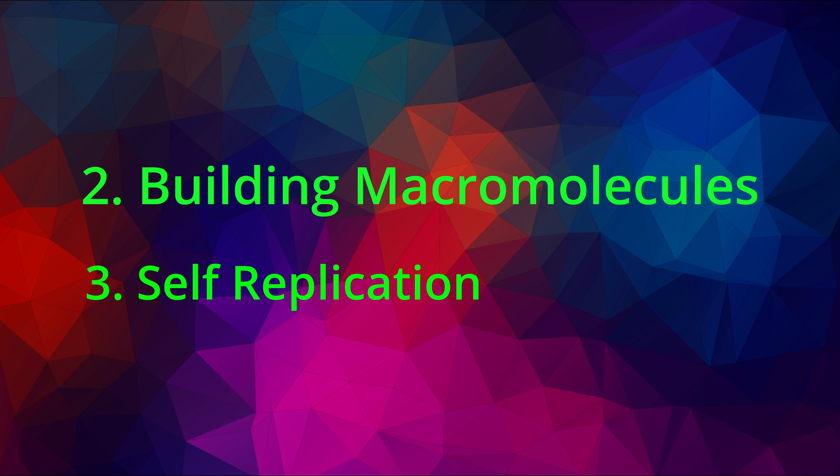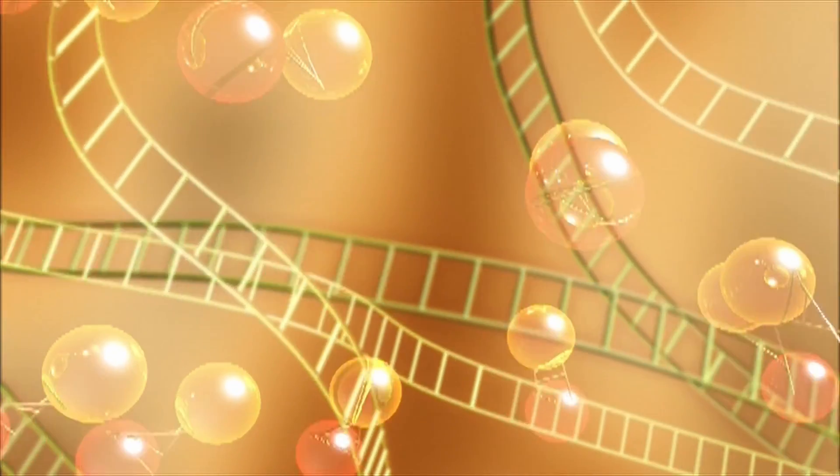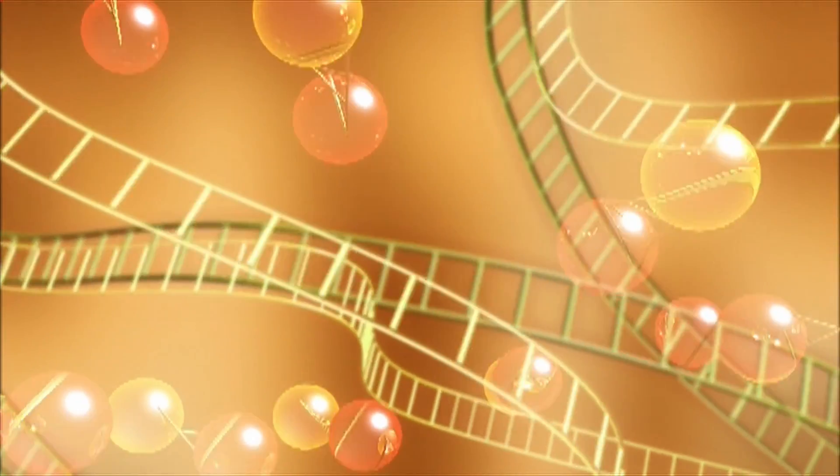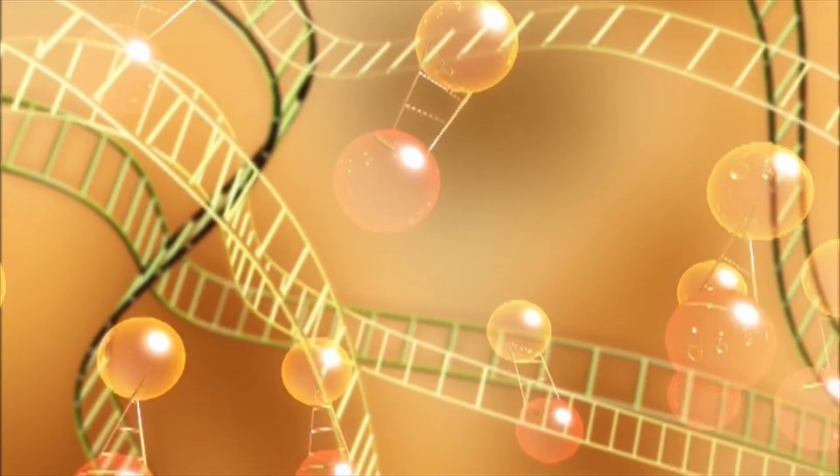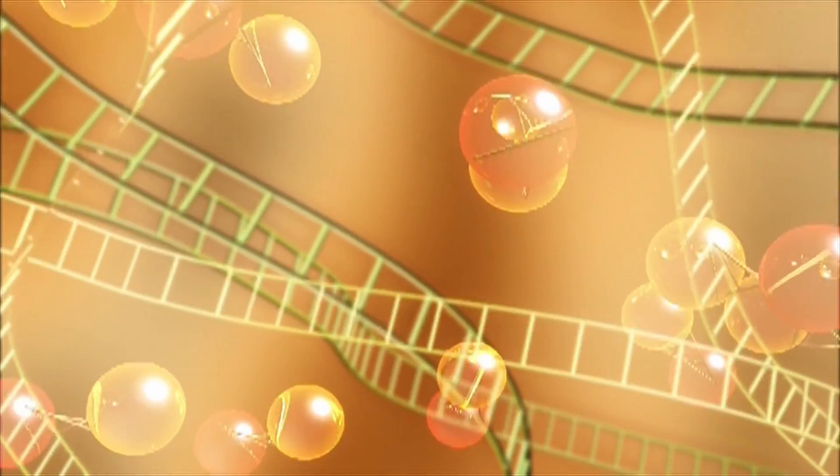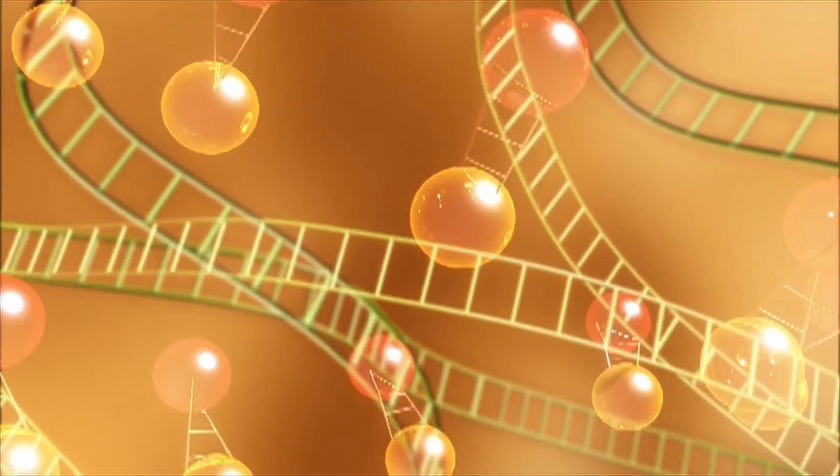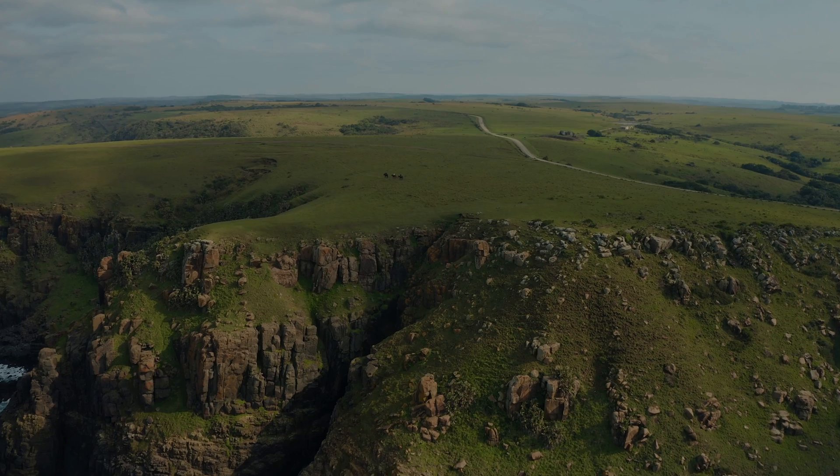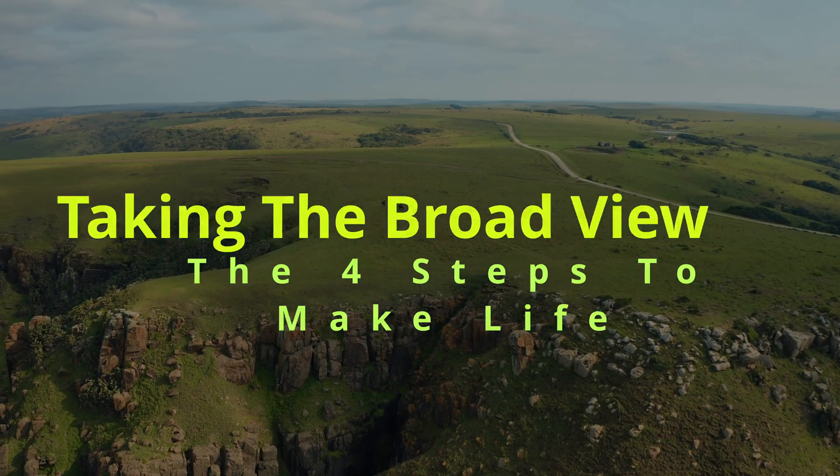And step four, the membrane, can enter the picture whenever you want. You can add it in the beginning, and then the biomolecules would have to have assembled within the membrane somehow. And that raises a lot of complications. Or you can add it at any point along the process up to the very end, such that a self-replicating molecular system that is evolving Darwinianly then finds itself within a membrane. We're going to mostly avoid the ambiguity these possibilities raise, and instead just take a broad look at these four steps.